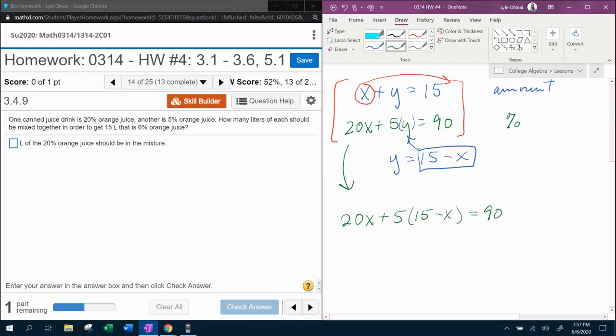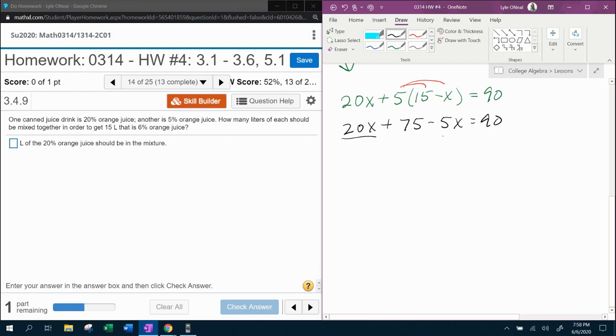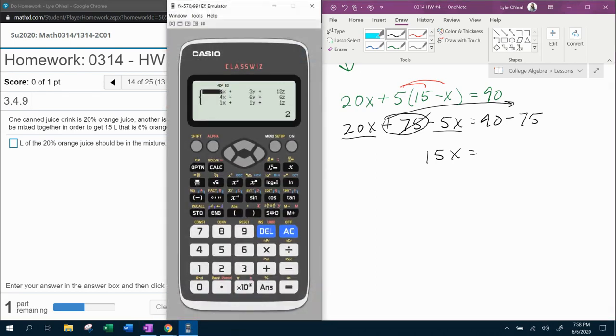And now I can solve for X. Next step, distributive property. That's going to give me 20X plus 15 times 5 is 75 minus 5X equals 90. Combine like terms. 20 minus 5 is 15X. 75 wants to move over to make minus 75. And what is 90 minus 75? Let's see here. That is 15. Oh, look at this. Divide both sides by 15. This is going to be nice.